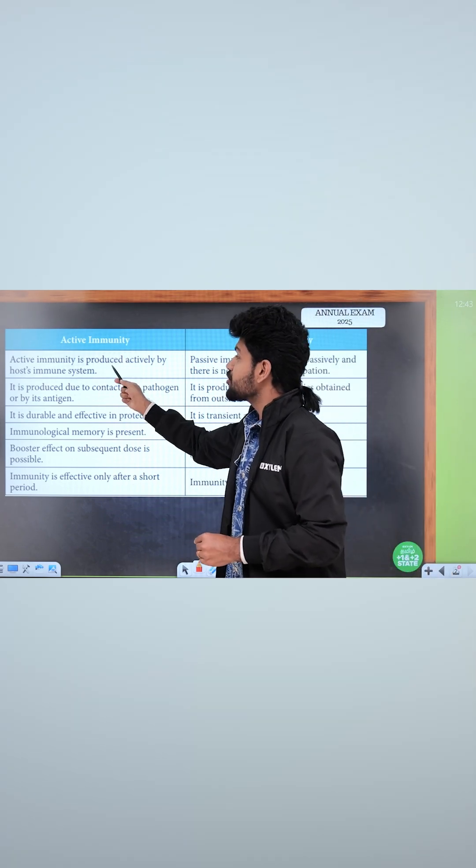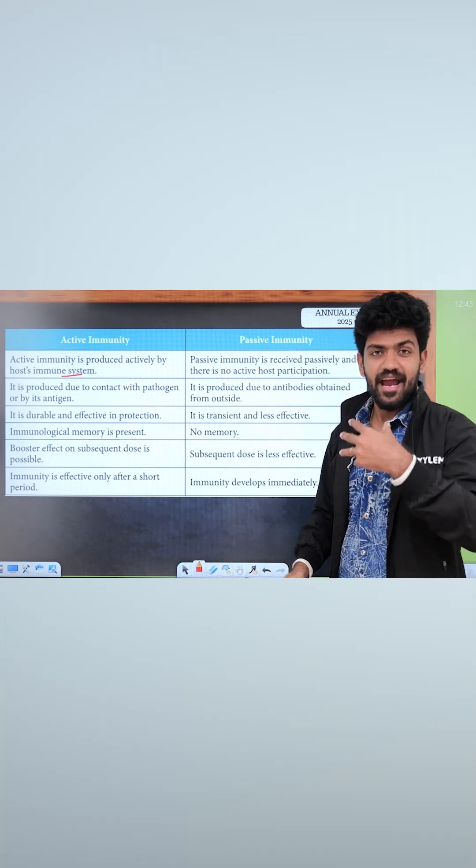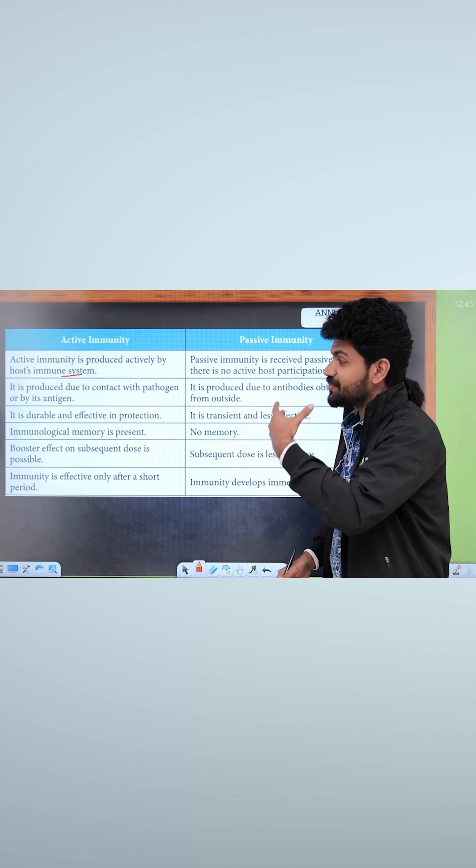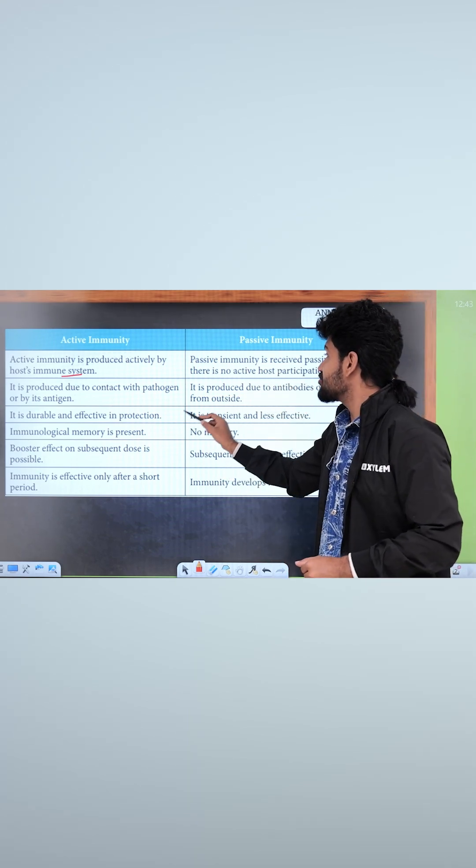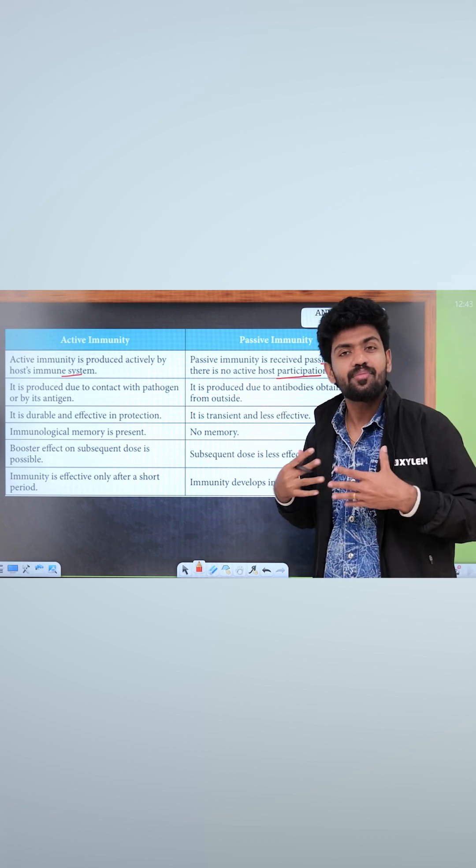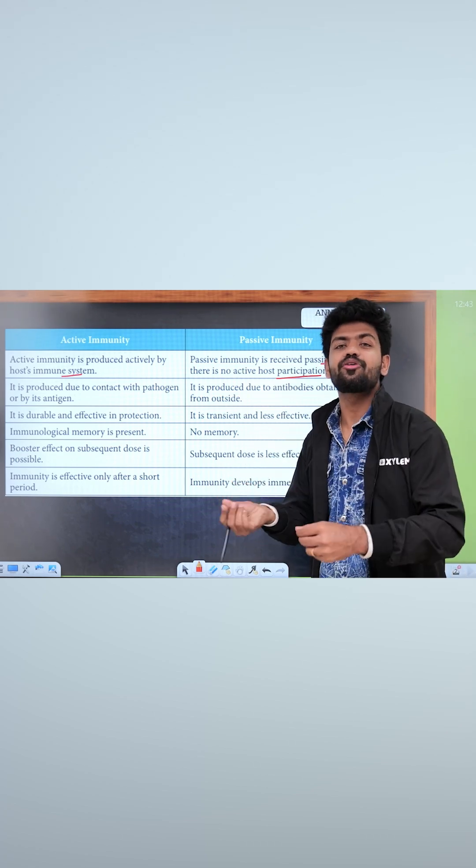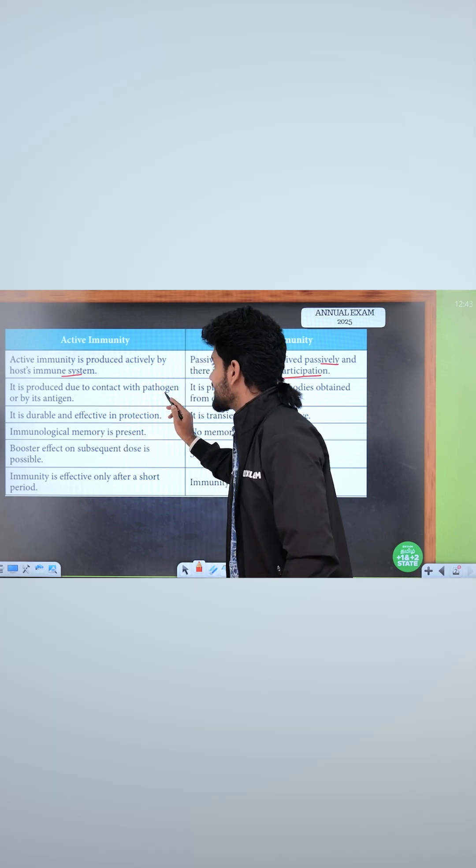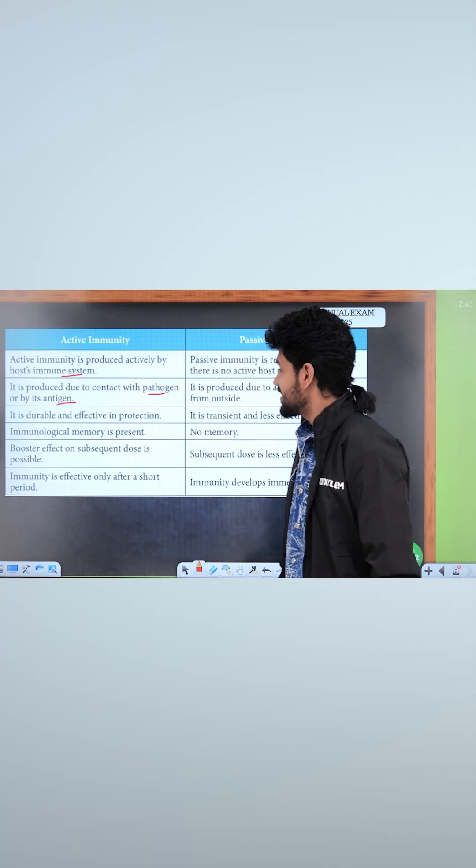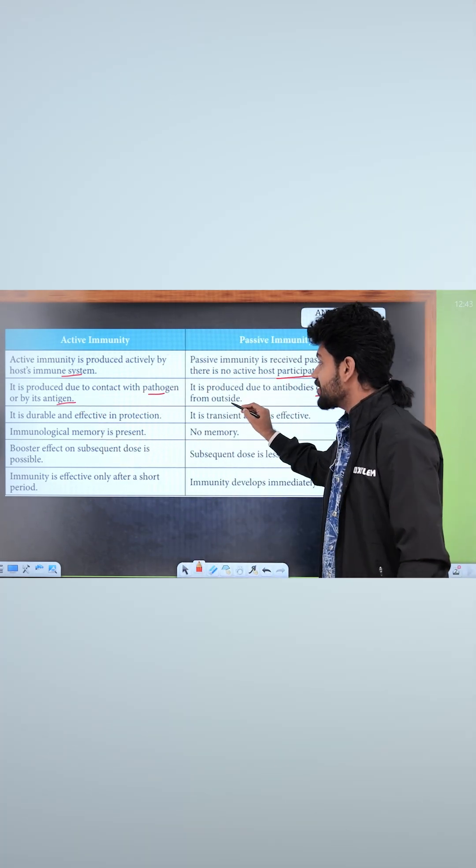Active immunity is produced actively by host immune system. Passive immunity is received passively and there is no active host participation. It is produced due to contact with pathogen or by its antigen. It is produced due to antibodies obtained from outside. Very important point.